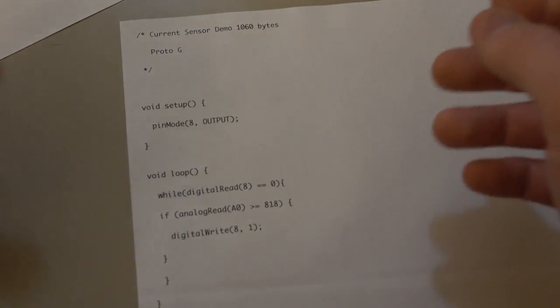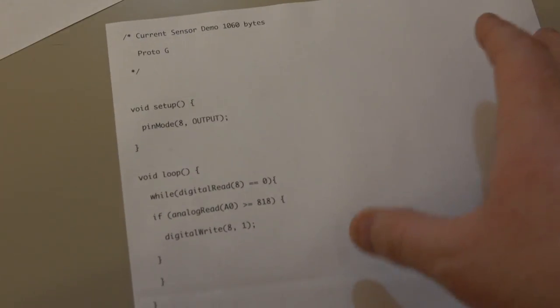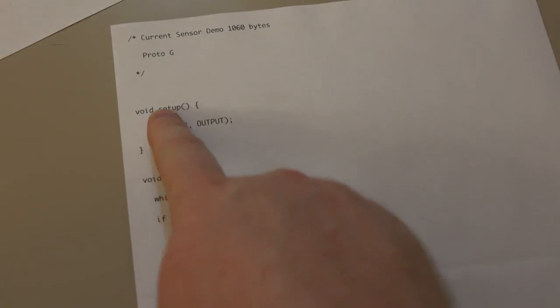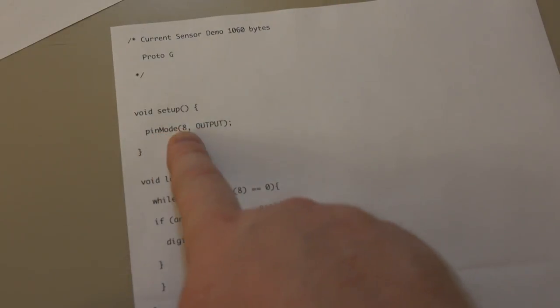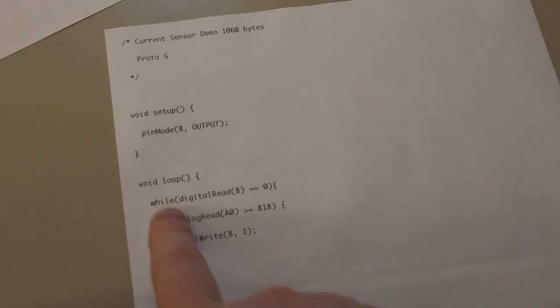But it's kind of difficult to read. If I were to give this to someone else, it would be kind of confusing. So basically we have our setup. We're letting the microcontroller know that digital pin 8 is going to be an output. And we have our loop.